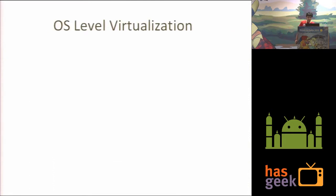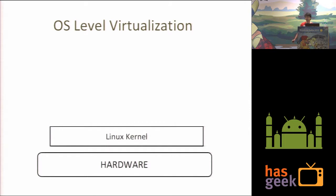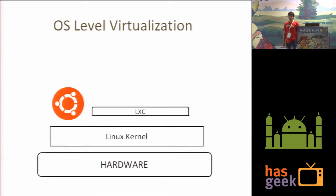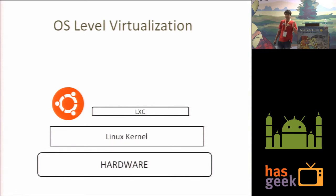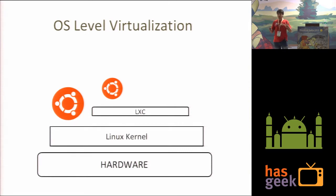What I introduce is operating system level virtualization. In OS level virtualization, there is hardware over which a Linux kernel runs. It is installed with a host OS running LXE. LXE is a set of tools which takes advantage of Linux kernel features — security features, resource sharing, and resource isolation. It allows us to run other operating systems like Ubuntu or Fedora as processes which share resources and are isolated.